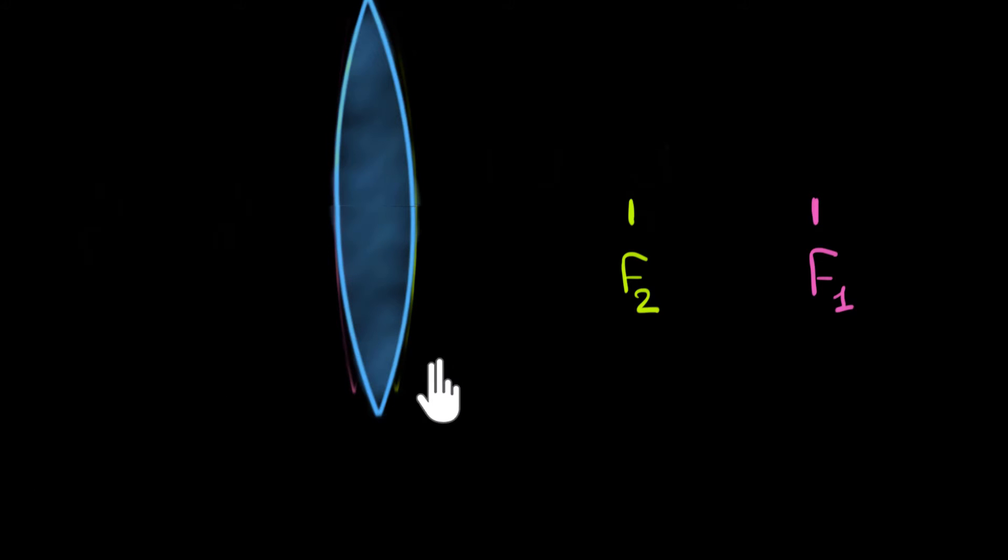Suppose we have a thin lens of focal length f1 and we put in contact with it another thin lens of focal length f2. Then these two thin lenses in contact can be thought of as one giant effective lens. So the question is, what will be the focal length of this effective lens? How will it be connected to f1 and f2?